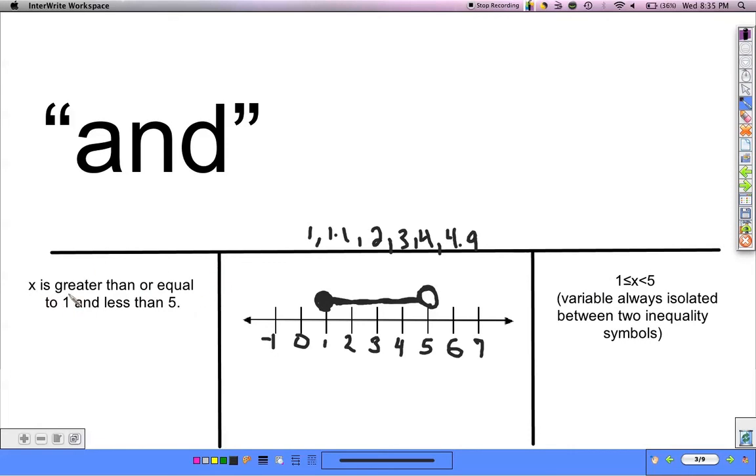If I have x is greater than or equal to 1, I would write that as x is greater than or equal to 1. And then I also have x is less than 5.